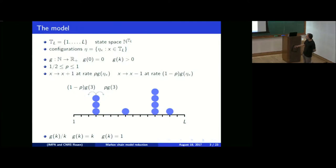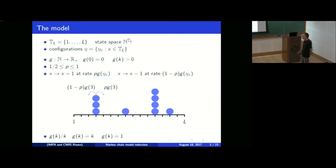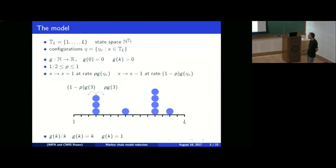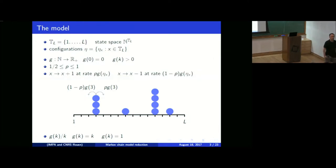If you think of dividing g(k) by k, when there are k particles each is jumping with rate g(k)/k. So if g(k) = k, this ratio is 1 and you have independent particles moving in the torus. While if g(k) = 1, you can think of servers and queues: on each site you have a server giving service with exponential times of rate 1, at the end of which the client jumps right or left. That is the model.